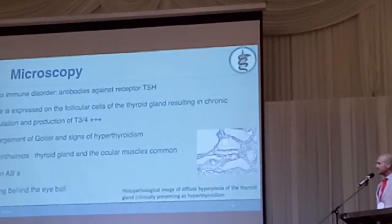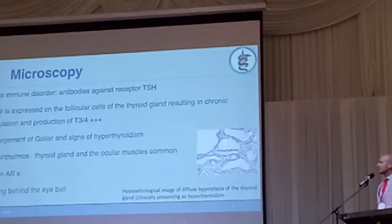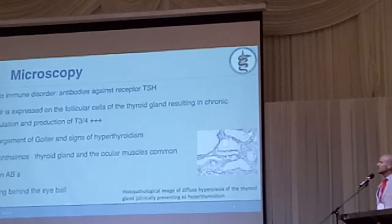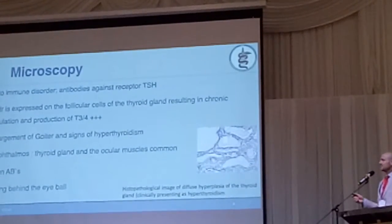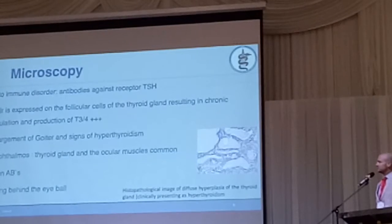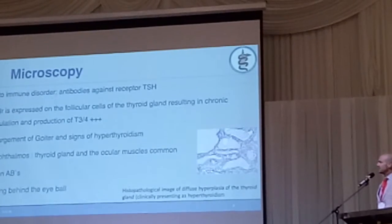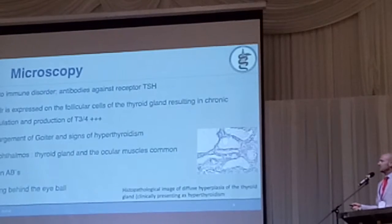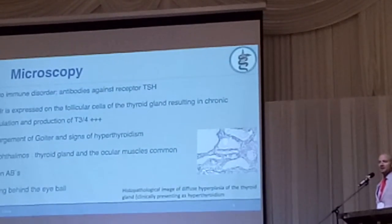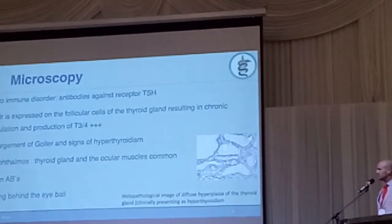When you look at microscopy and the pathophysiology, we recognize it's an autoimmune disorder. There are antibodies against the TSH receptors, which are expressed on the follicular cells of the thyroid gland. This results in chronic stimulation and production of T3 and T4, giving you enlargement of the gland and eventually signs of thyrotoxicosis, and also exophthalmos. There appears to be a common antigen that the muscles behind the eyes share with the thyroid gland, causing the muscles to swell and the eyes to protrude.